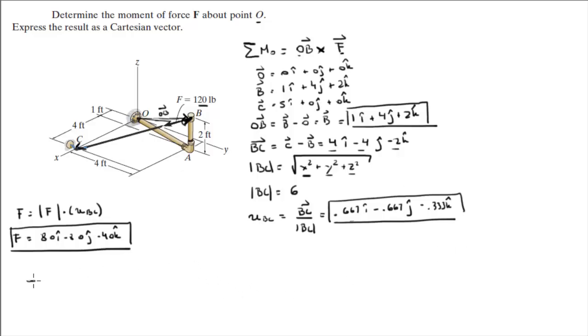So the sum of the moments at O, I mean sorry, the moments at O created by F is given by the cross product of, the cross product of OB cross F.